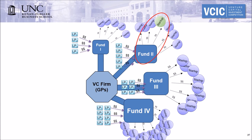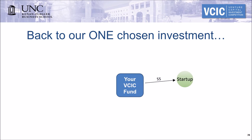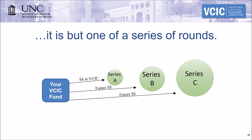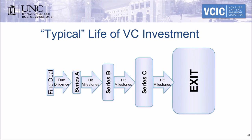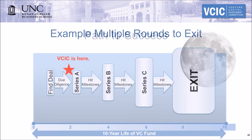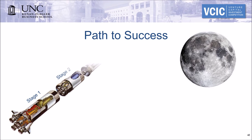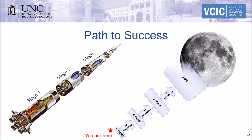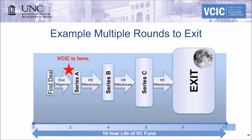The startups at VCIC are often raising a Series A, meaning your investment is but one of a series of rounds. A typical venture capital investment will go through several rounds before exit. At VCIC, you are performing due diligence and making an investment decision in the Series A, but you can't do so without a vision for the future. A moonshot is a great metaphor here: the startup is like a rocket ship and the VCs are supplying the rocket fuel. VCs don't launch rockets without a specific idea of how it's going to land on the moon — this affects you directly because you cannot determine a pre-money valuation or investment size for Series A without knowing how much fuel it will take to get there and what that moon landing will look like.